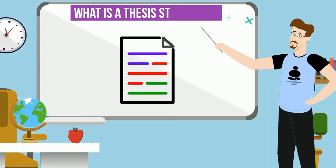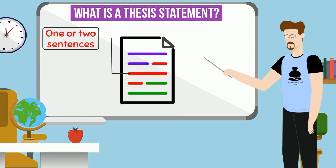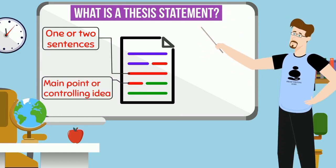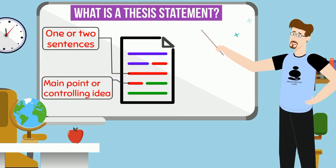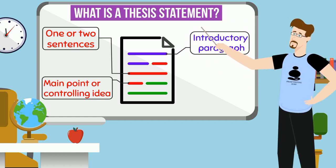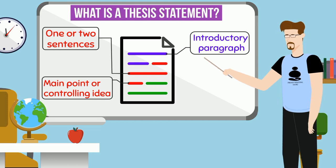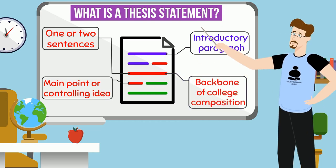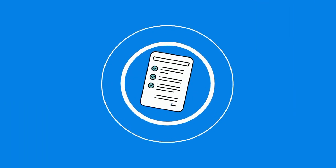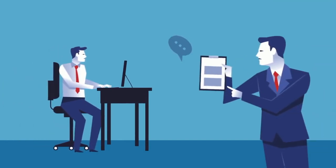What is a thesis statement? A thesis statement is one or two sentences that contain the main point or controlling idea of your essay. The thesis statement is usually placed at the end of the introductory paragraph. The thesis statement is the backbone of college composition. There are three major types of thesis statements.